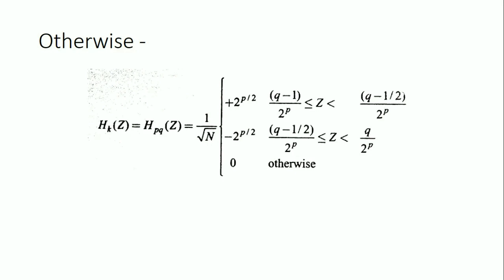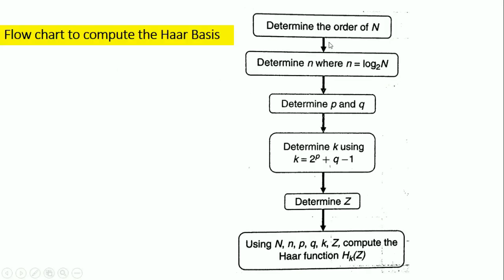Here is the flowchart to compute the Haar basis. The first step is to determine the order N, then find the small n value given as log N base 2, then determine the p and q values, then determine the k value given as 2^p + q − 1, find the z value, and finally calculate the Haar function h_k(z).